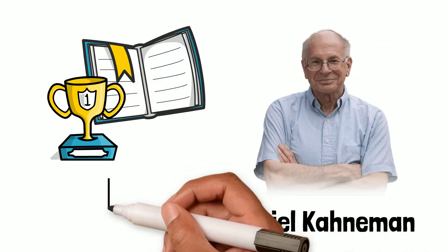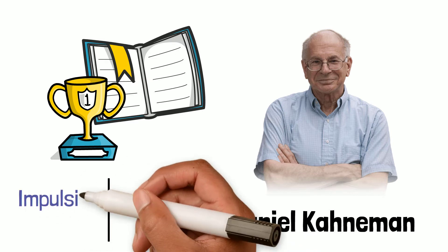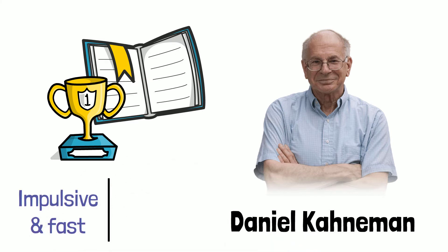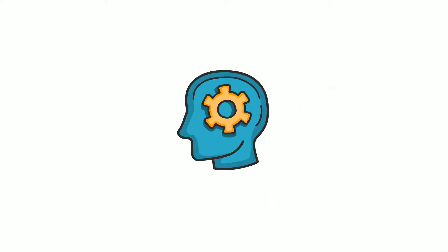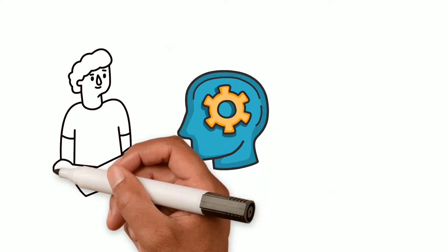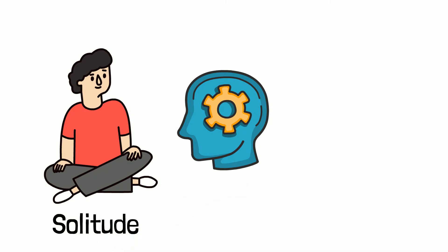Tracy references the Nobel Prize-winning psychologist Daniel Kahneman when he suggests that there are two types of thought processes: impulsive and fast, and slow and rational.